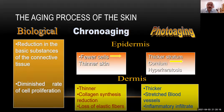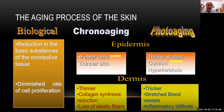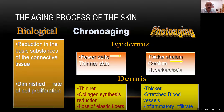Is it possible to have chrono aging without photo aging? Yes — areas of the body that are always covered have only chrono aging. But you cannot have photo aging without chrono aging, because photo aging actually accelerates chrono aging. So whenever we treat photo aging, we must also address the chrono aging component and stimulate collagen to reverse those changes as well.